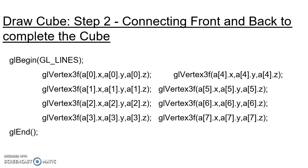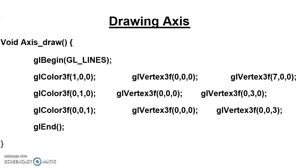After completion of the cube, what remains is how to draw the axis and how to label it, and also the important part of how to rotate the object with respect to X, Y, and Z axis. Now we will check how to draw the axis. As it is a 3D environment, it is necessary to draw three axes: X, Y, and Z. We will draw X axis first, then Y axis, then Z axis.